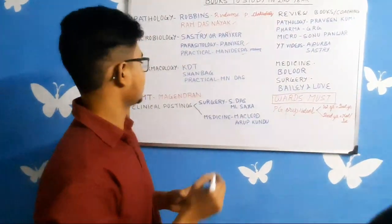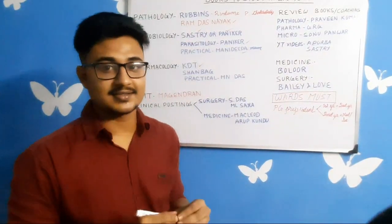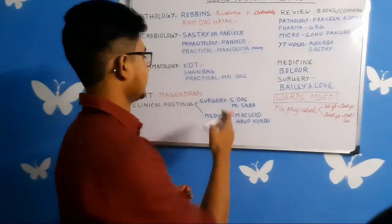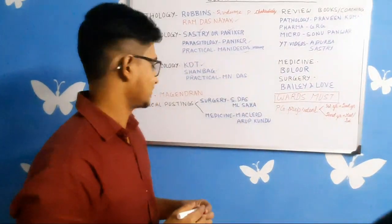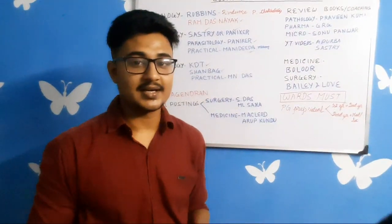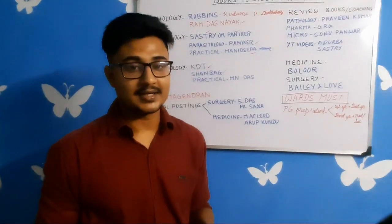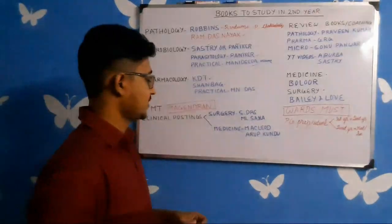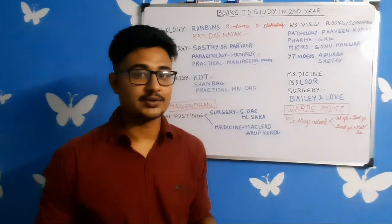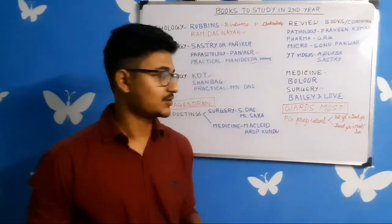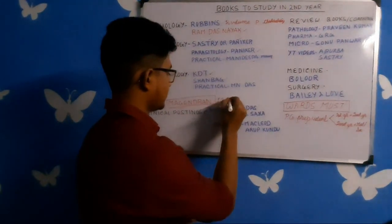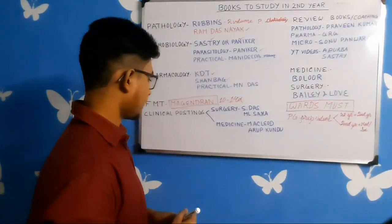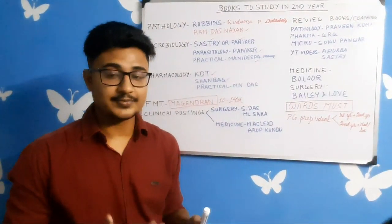In pharmacology, KDT is the standard textbook for India and is a must-buy. Follow KDT line by line, and Shanbhag for exams. For practicals, Amenazhie is there. Coming to FMT, rather than heavy books I am suggesting a review book — Magendran sir's Review of FMT — because you can revise the whole book in 10 to 14 days, and it will help you clear your concepts and solve exams.